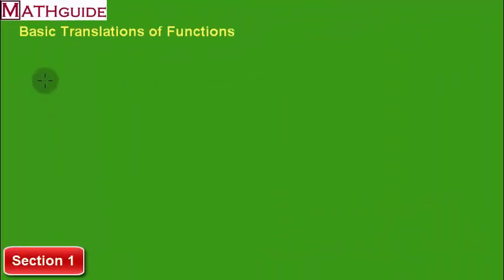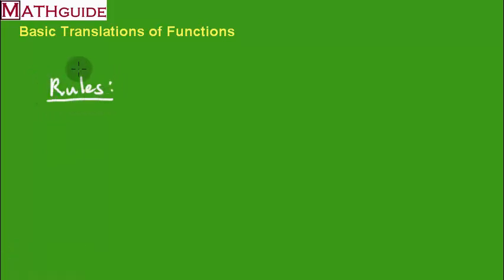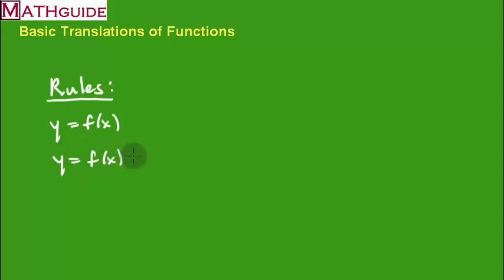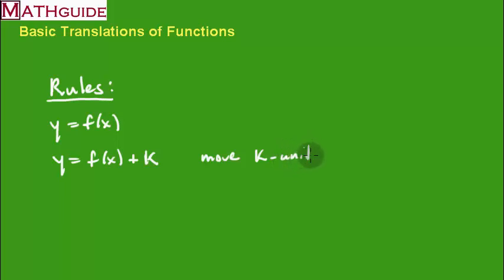In this first section we're going to talk about some basic rules when it comes to translations — just three of them. Remember, function notation: f of x is really equal to y. So let's say we start off with some function, and if we add some constant k to our function, it turns out that the function will move k units vertically.